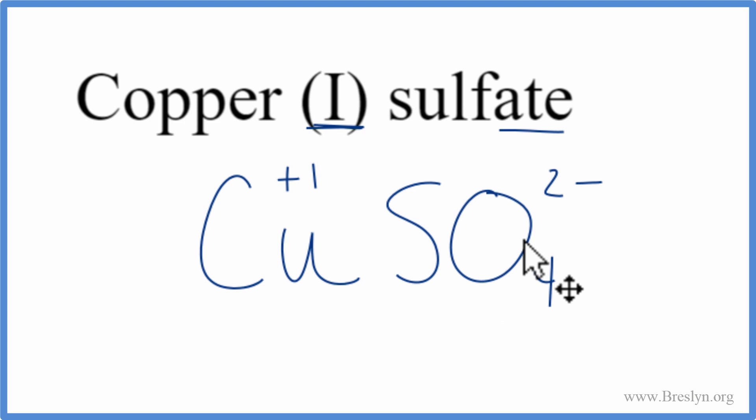We'll use something called the crisscross method. We'll move the 2 here, and then we can move the 1 over here. We don't write the 1 by convention, get rid of the charges here. And that's the formula for copper(I) sulfate.